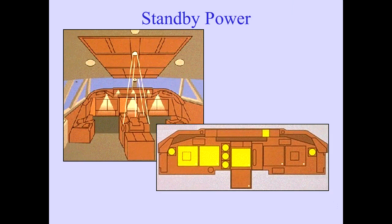Standby electrical power is provided for the dome lights, flood lights, standby magnetic compass light, and the aisle stand flood light. Also, all standby instruments, clocks, upper CRT, and ICAST display select panel are illuminated on standby power.